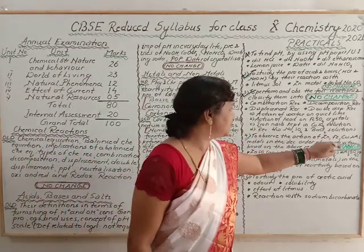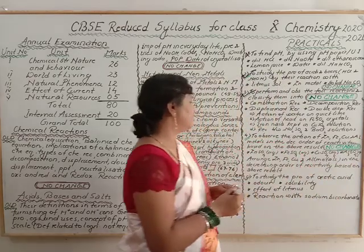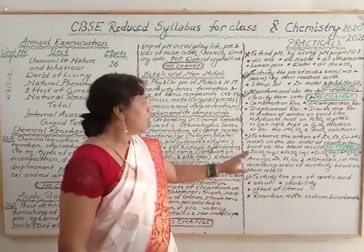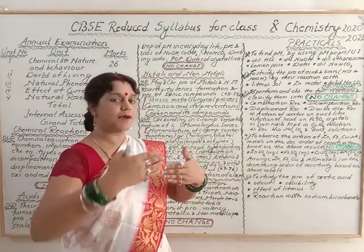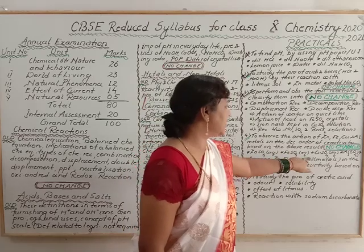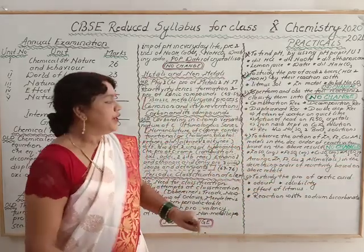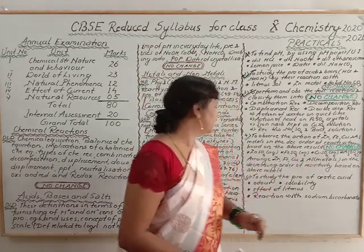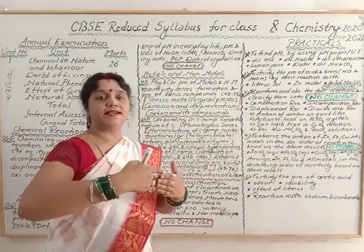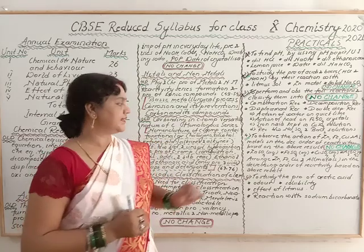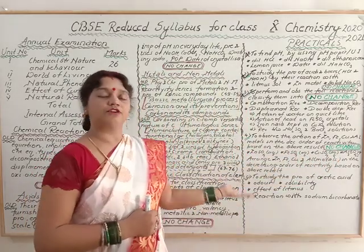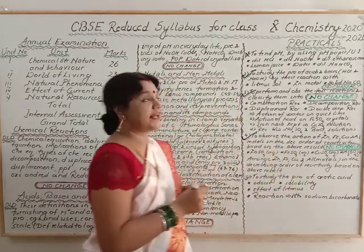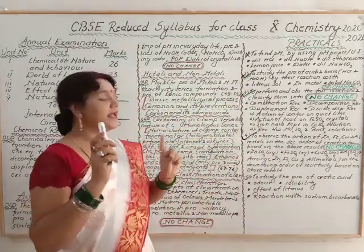Practical 4: To observe the action of zinc, iron, copper, and aluminium metals in decreasing order of reactivity. Based on results, arrange them in a reactivity series — the highly reactive metal displaces the less reactive one. This practical is also not deleted.